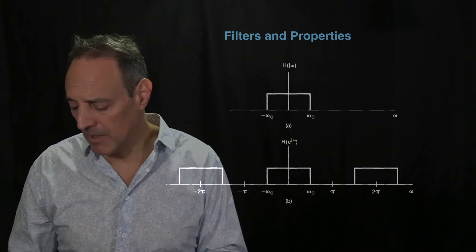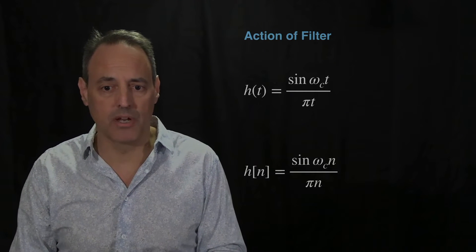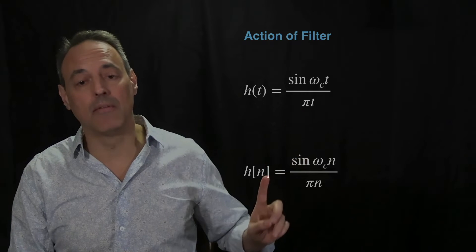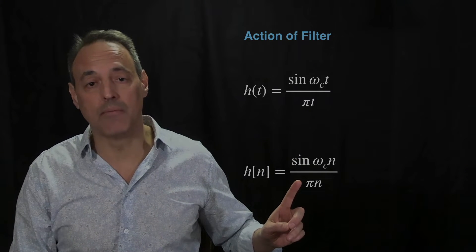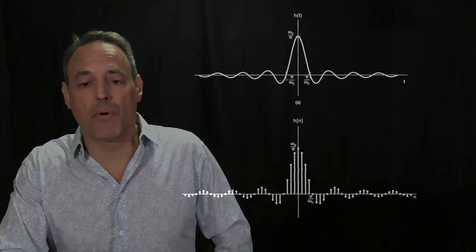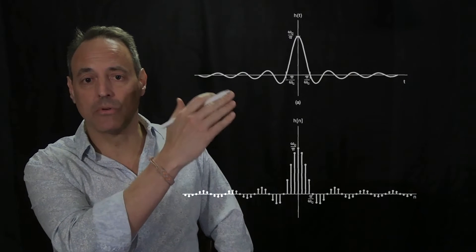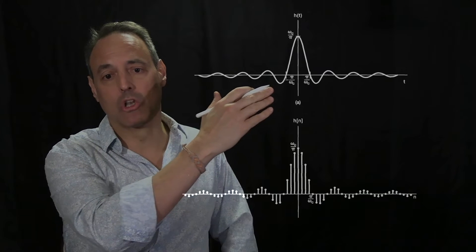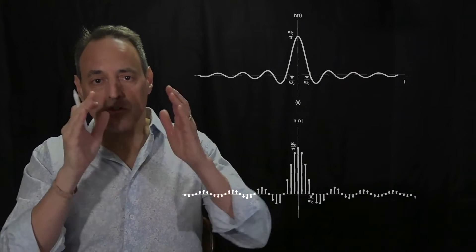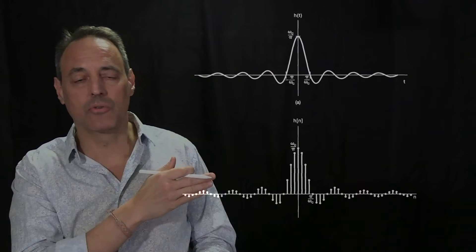If you run those filters through and do the inverse Fourier transform, you get sinc functions — sine(t)/t type behavior for the continuous case and sine(n)/n for the discrete case. These signals have these shapes, and this is really the issue. In time, this notch filter produces long-lived oscillations that decay like 1/t, so if you do this filtering you get a signal that lives for a very long time on either side, decaying very slowly.